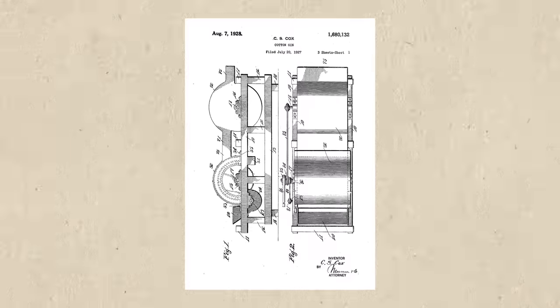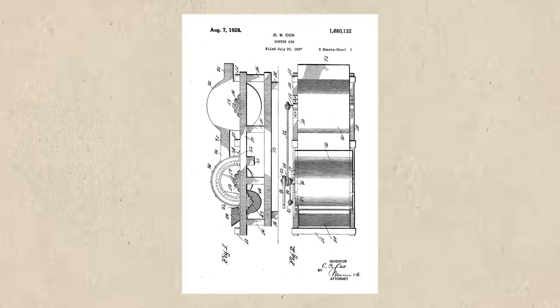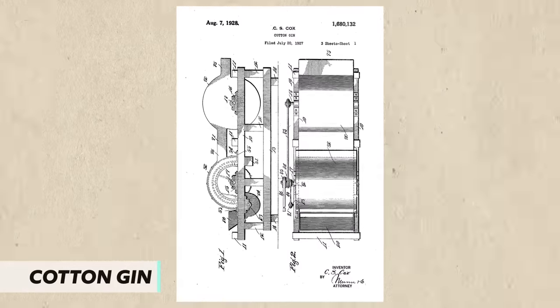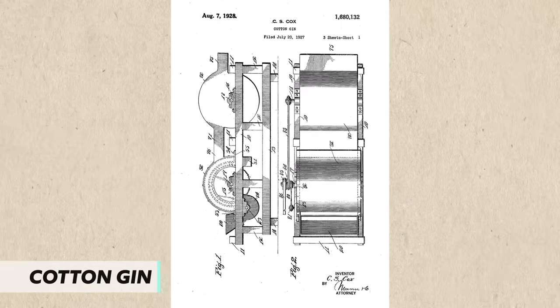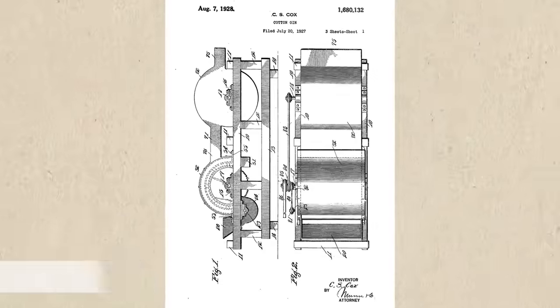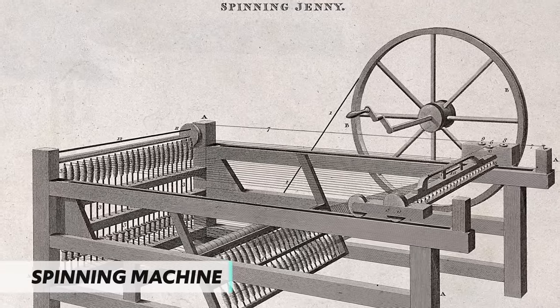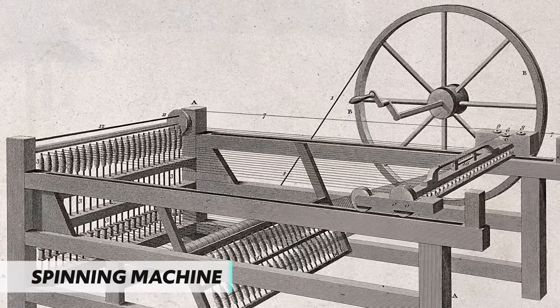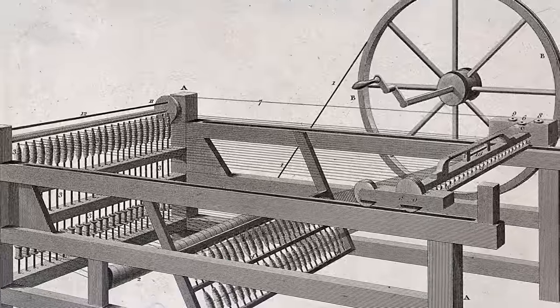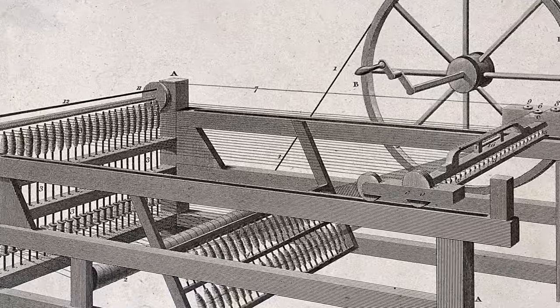Another significant innovation in the Market Revolution happened in the agricultural industry. Prior to his work in interchangeable parts, Eli Whitney had invented the cotton gin, which significantly sped up the process of separating cotton seeds from cotton fibers, which was then thrown into a spinning machine that turned the raw cotton into yarn. These inventions transformed southern agriculture, which could ship way more cotton than previously was possible.